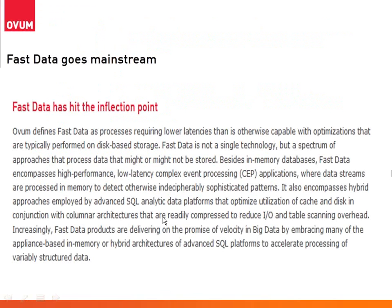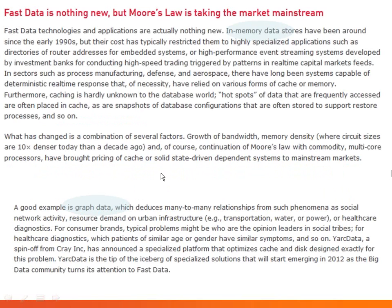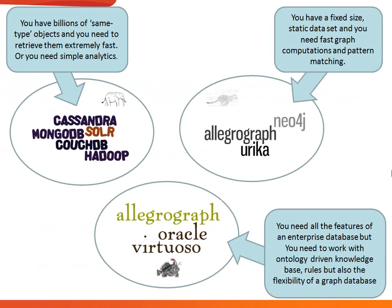There's a very interesting report on this. The key sentence is: fast data products are delivered on the promise of velocity in big data by embracing many of the appliance-based in-memory or hybrid architectures and SQL platforms to accelerate processing of variable structured data. That report goes on to say it's finally time for in-memory data storage and graph databases. To summarize: if you have billions of same-type objects and need to retrieve them extremely fast or do simple analytics, big data and NoSQL solutions are probably good enough.